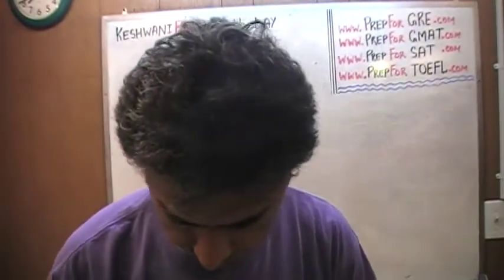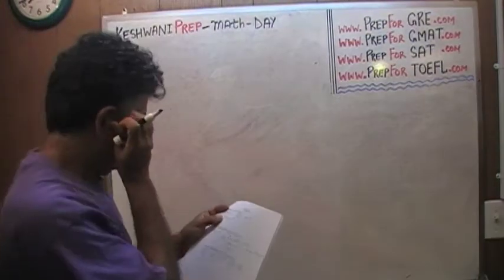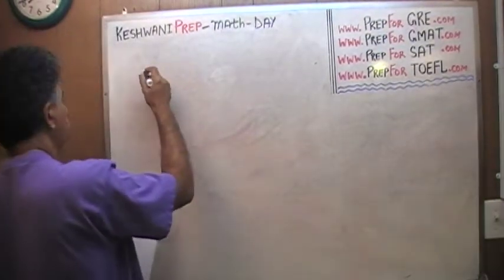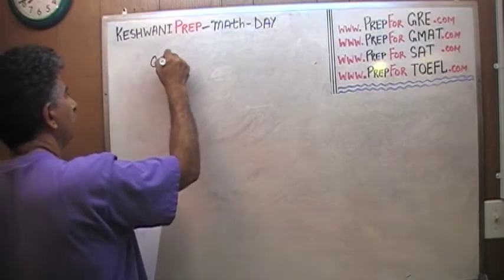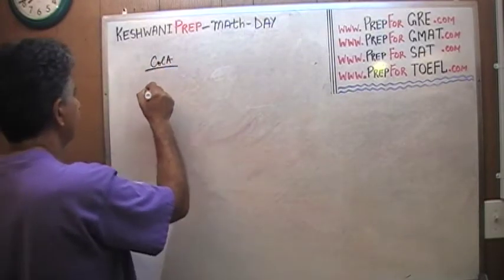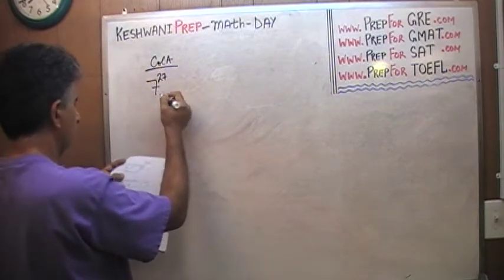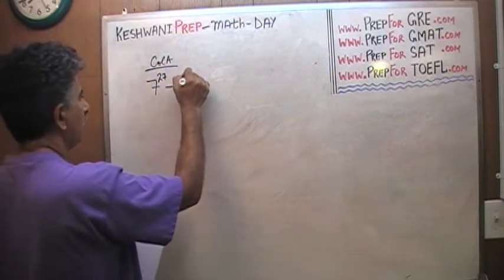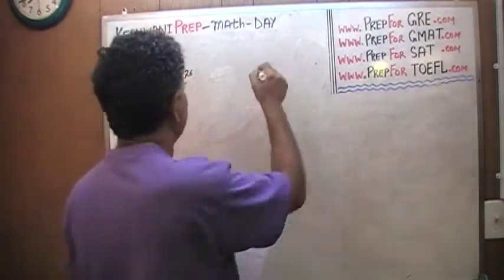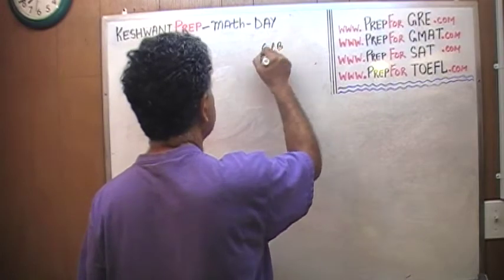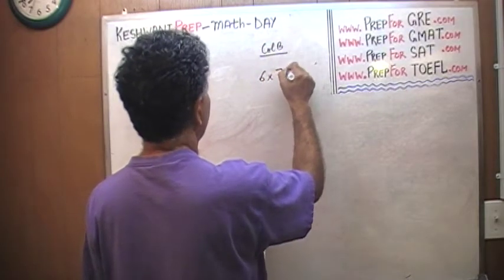The very first problem we have here involves two quantities. In column A, we have 7 raised to 27 minus 7 raised to 26. In column B, we have 6 times 7 raised to 26.